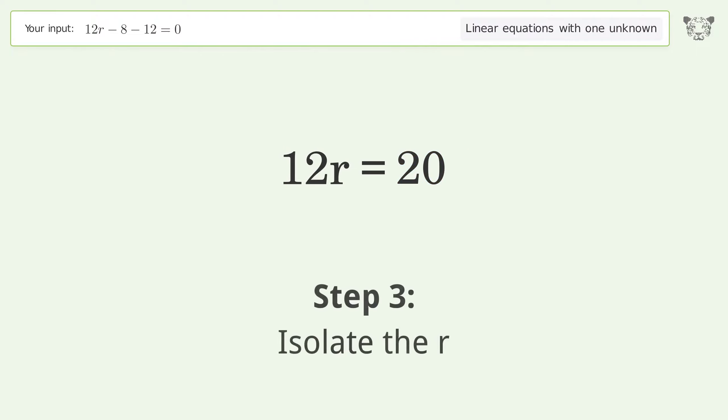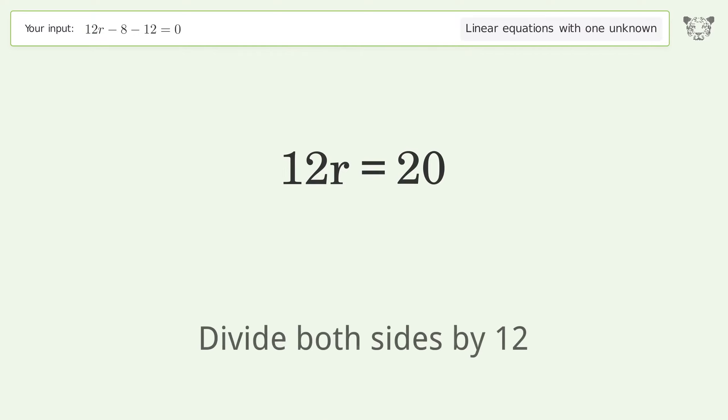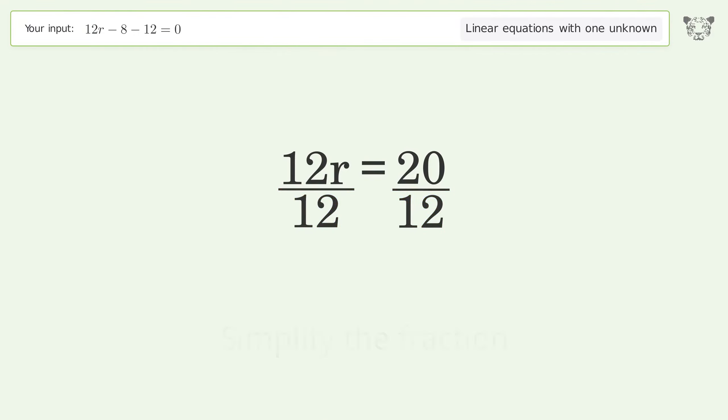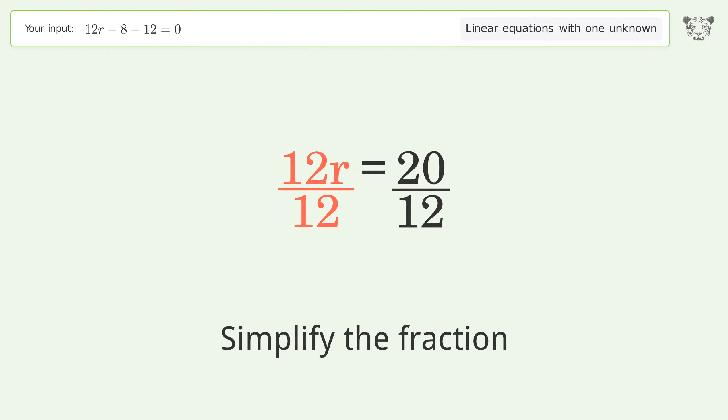Isolate r: divide both sides by 12. Then simplify the fraction.